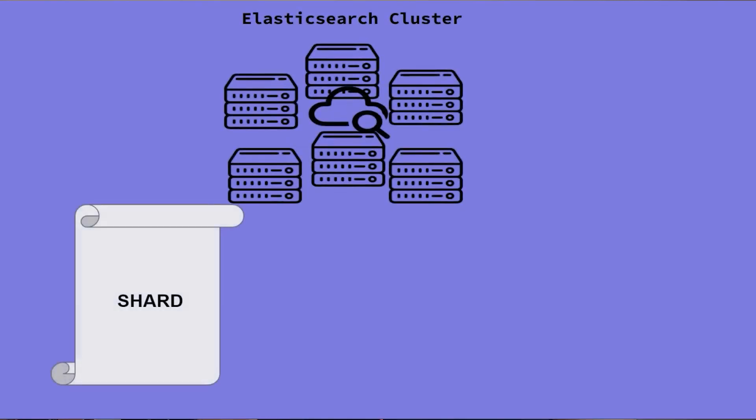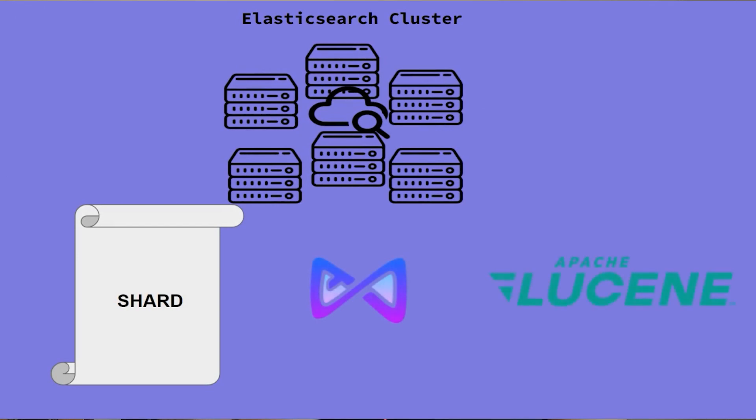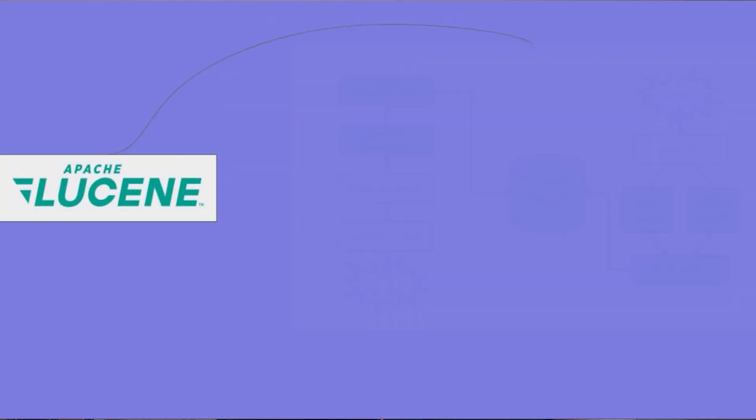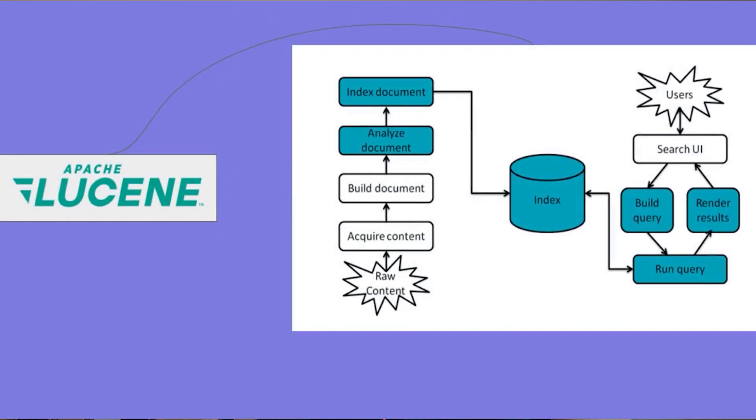An Elasticsearch index can have multiple internal shards. Each of these shards is actually a Lucene index — Apache Lucene. An Apache Lucene index is essentially an inverted index. An inverted index simply means that for a particular key, you have a set of documents that contain it.